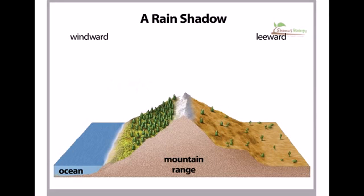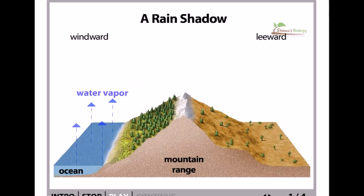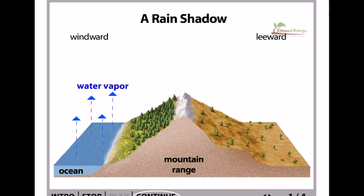In this video podcast I am going to talk about rain shadow and what is the rain shadow. Wind patterns and land morphology generally influence the regional climate of the earth. We can illustrate this by observing the effect of the prevailing wind and a mountain range on the level of rainfall in the region.